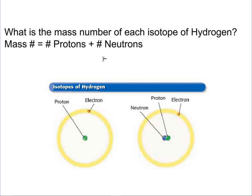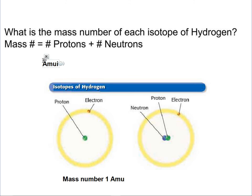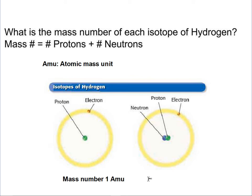What is the mass number of each isotope of hydrogen? Mass number equals your protons plus your neutrons. In the first one, it only has one proton, so the mass number is one AMU — AMU stands for atomic mass unit. In the next one, we have one proton and one neutron: one plus one gives you two AMU.